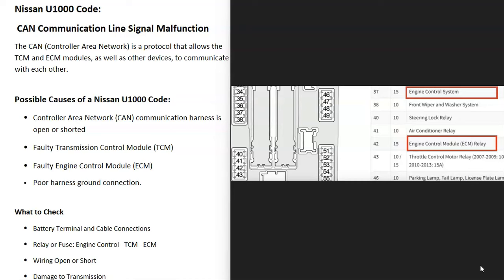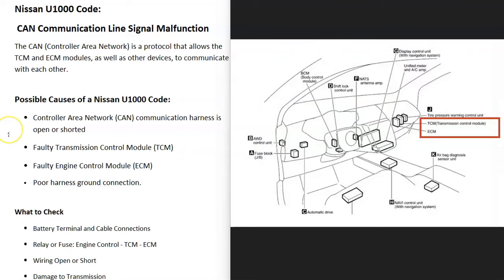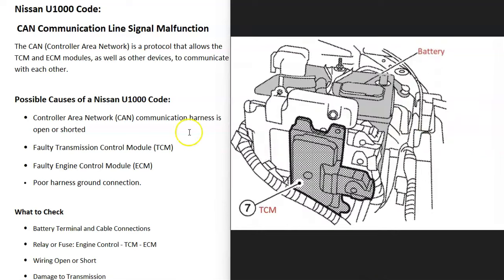Check all your fuses both inside the engine compartment and underneath the dashboard. Also locate where the TCM and ECM are — this varies by vehicle. For example, on a 2005 Nissan Murano they're located up on the passenger side behind the glove box, and on a 2010 Nissan Altima the TCM is located right in front of the battery.